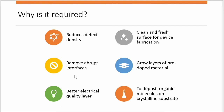We also need to remove abrupt interfaces, and growing an epilayer achieves this. Furthermore, we can grow layers of pre-doped material — P-type or N-type — so we can add these materials to create the required N-type or P-type substrates. We can also deposit organic molecules on a crystalline substrate. These are the key requirements for epitaxy.